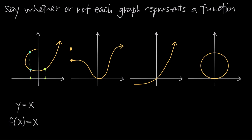Which brings us to the vertical line test. Basically, all I'm doing is testing different values of x — I can pick all these different values of x, look at the graph, and see which y values are returned. If I ever find a point for x that returns 2 different values for y, then I know the graph does not represent a function. If I can draw any perfectly vertical line that intersects the graph at more than one point — for example, this vertical line crosses the graph at 2 points — that means for this single x value I can get back 2 different output values for y.